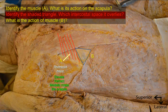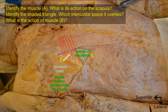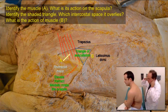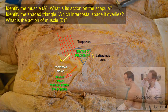Identify the shaded triangle and which intercostal space it overlies. The triangle is called the triangle of auscultation, bounded by trapezius, latissimus dorsi, and rhomboid major. The triangle enlarges when the scapula is protracted by folding the arms across the chest with the trunk flexed. The floor is formed by ribs six and seven, with the sixth intercostal space between them becoming subcutaneous, allowing respiratory sounds to be heard better with a stethoscope in this region.